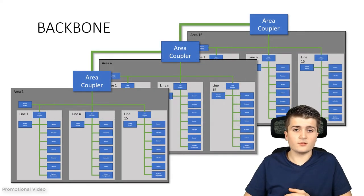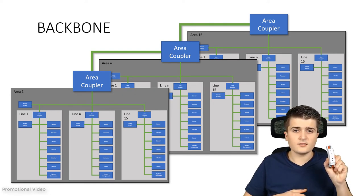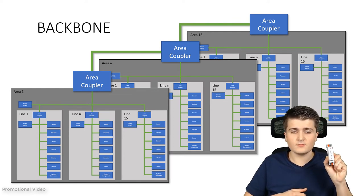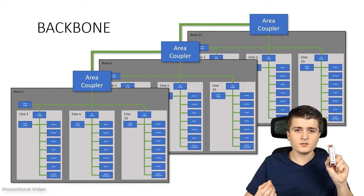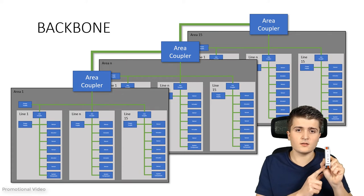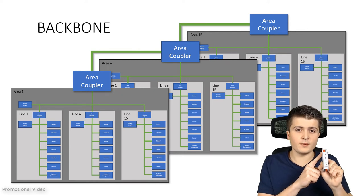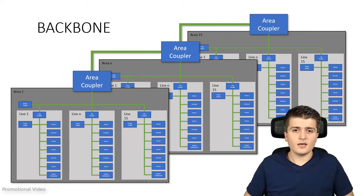In order to be able to connect individual areas with each other you need a so-called area coupler. Now this sounds more complicated than it is because it basically is the same device like the line coupler. And in the end you use the same device type because the ETS already knows if this device should work as a line coupler or as an area coupler. And then the effect is the same. This device galvanically isolates this side from this side. There we have the area and there the backbone. So therefore we would also need at the backbone a separate power supply. And then up to 15 areas can communicate with each other, and each area can consist of 15 lines.